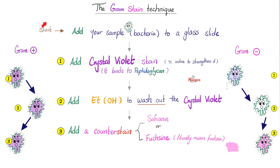Here is how you do the gram stain. You start with your sample containing bacteria — it could be sputum, urine, blood, or stool — and add it to a glass slide. Then add crystal violet stain, and you can add iodine to strengthen it. The crystal violet binds peptidoglycan, which is part of the bacterial cell wall. At this point, if it's gram-positive it is purple, and if it's gram-negative, it is also purple — so far.